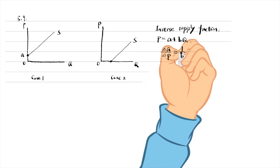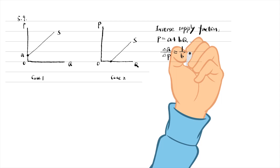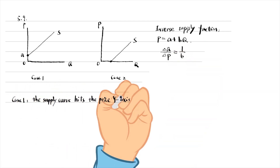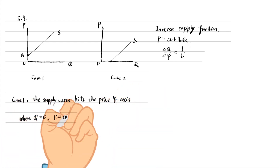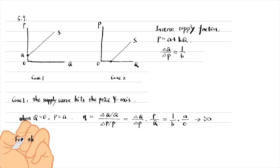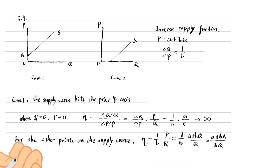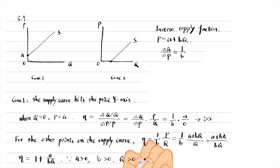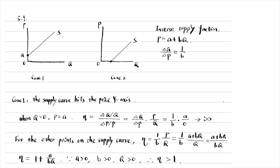Delta Q divided by delta P is 1 over B. In case 1, the supply curve hits the price y-axis. At that point, the quantity is 0, so the price is A. When we substitute the values into the formula of the price elasticity of supply, eta, we find that eta approaches infinity. For the other points on the supply curve, eta equals 1 plus A over (B times Q). A is positive, B is the slope of the supply curve and is positive, and Q is the quantity supplied and is positive too. So the price elasticity of supply is greater than 1.